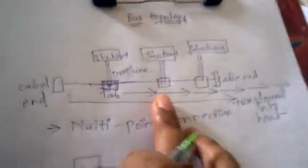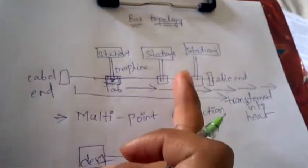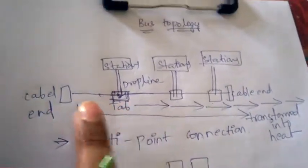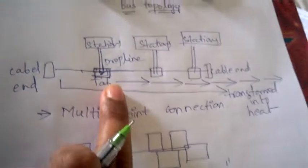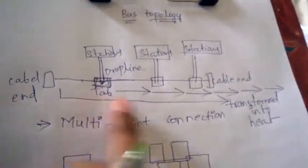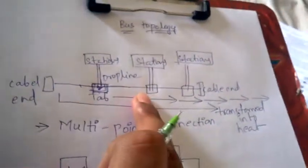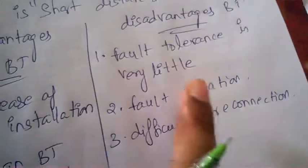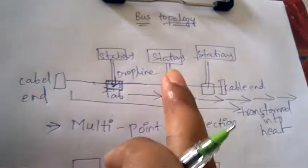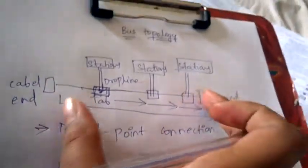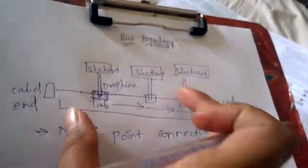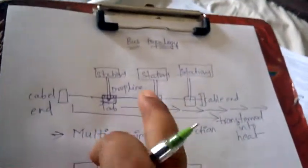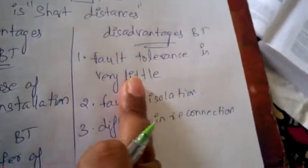The time taken by the architecture to recover back to the normal situation is called fault tolerance. Fault tolerance being very little means that if there is any fault or error in bus topology, it takes more time to recover and return to normal. That is one disadvantage.